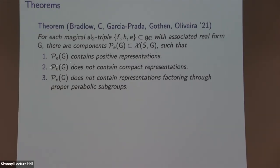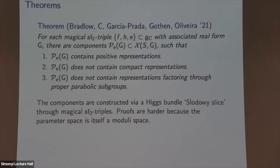Here is the technical theorem: for each magical SL₂ triple with associated real form G, there are components of the character variety which (1) contain positive representations, indicating they are higher-rank Teichmüller spaces; (2) do not contain any compact representations, analogous to the Hitchin section; and (3) representations here don't factor through proper parabolic subgroups — specifically, the centralizer of these representations is always compact. We construct this with a Higgs bundle version of the Slodowy slice generalizing Hitchin's construction.